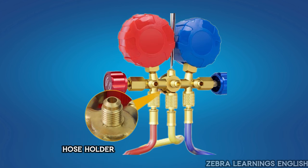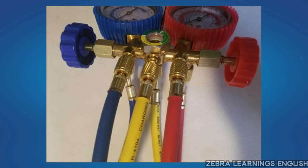At the back side of the gauge, you can see three dummy connections. When we are not using the gauge, we can keep the hoses connected to it. With this, the inside of the hose can be kept clean, without dust.